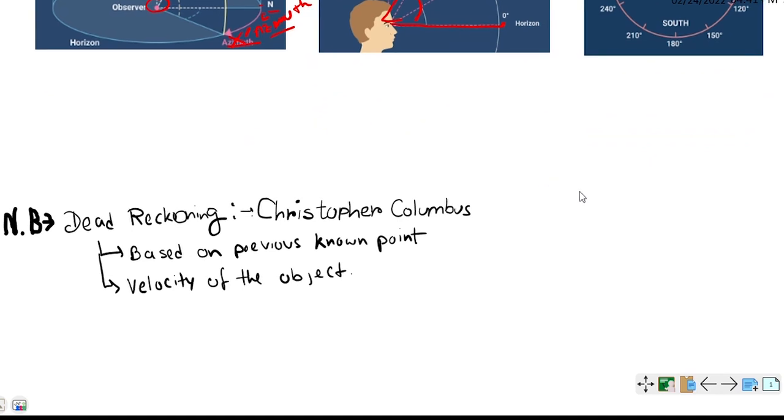That is dead reckoning. Now, what is dead reckoning? The dead reckoning system was discovered by Christopher Columbus. That is based on the previous known point and velocity of the object.